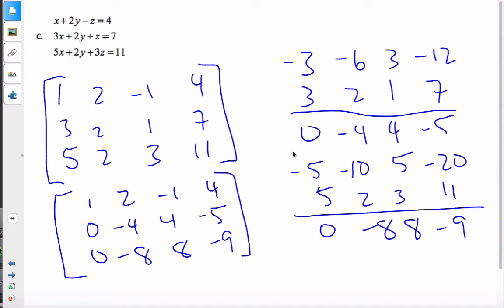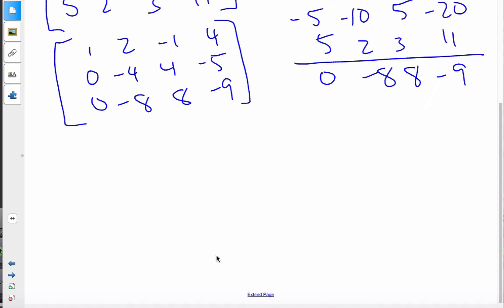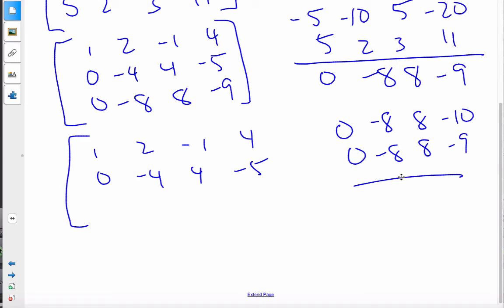Okay. And then I have to keep on simplifying. The top row I leave as is. 1, 2, negative 1, 4. The next row I'll leave as it is. But I'm going to multiply. To find the third row, I'm going to multiply this row by 2. So, 0, negative 8, 8, negative 2, or negative 10. 0, negative 8, 8, and negative 9. Let me do it by negative. Let me change these signs. Multiply by negative 2. So, that becomes positive, negative, positive. 0, 0, 0, 1. So, 0, 0, 0, 1.